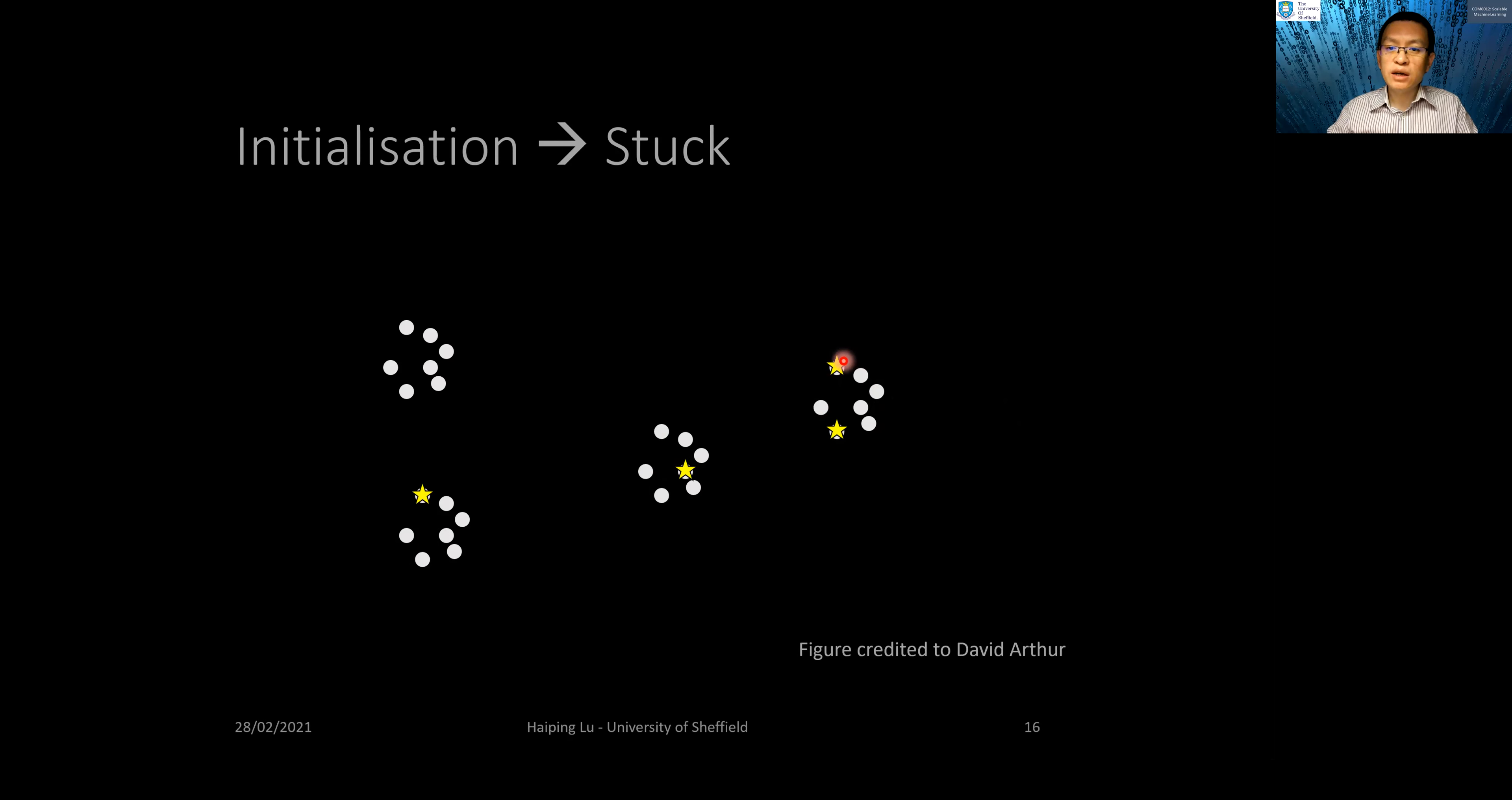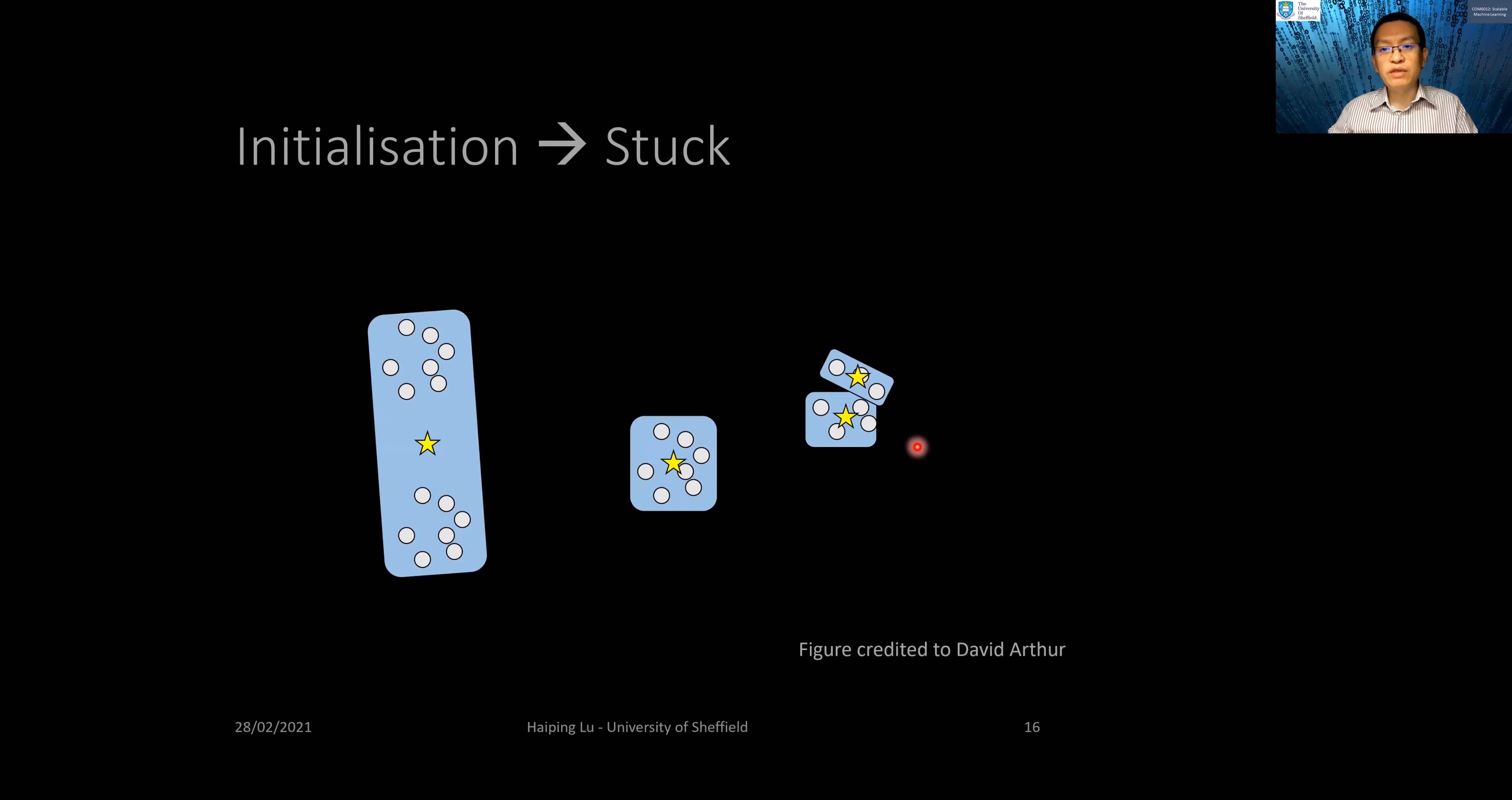Suppose these are the four points randomly chosen. If we run Lloyd's algorithm on this initialization, eventually this will be what we have. These points will be considered as one cluster with centroid here. This one is correct. But these two will be considered as two clusters with centroids here and here. This is obviously not a good clustering outcome.